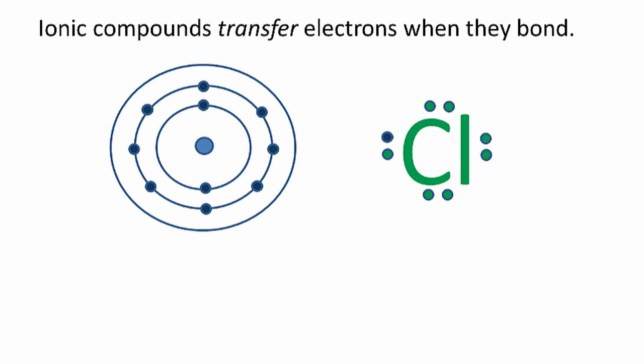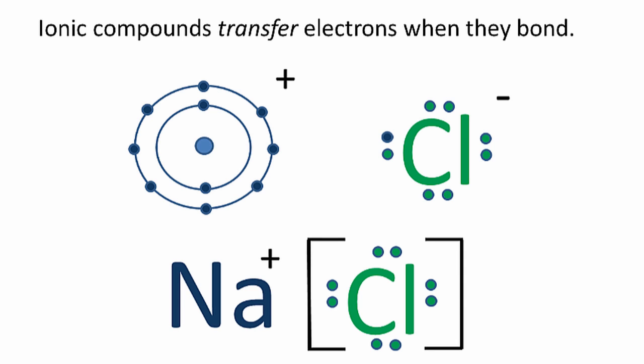that outer shell on the sodium is empty, so it's really not there anymore. That effectively means that sodium now has a full outer shell. The chlorine has a full outer shell, and they bond together to form sodium chloride. So that's the Lewis structure for sodium chloride.